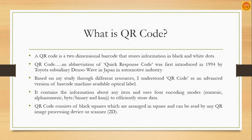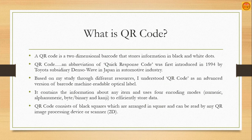QR stands for Quick Response Code. It was initially introduced in 1994 by a Japanese company from the Toyota automotive industry. Based on my study, I understood that the QR code is an advanced version of barcode — a machine-readable optical label. When we generate a barcode, it generates strips or lines based on the information provided to the system. The QR code is the advanced version of that barcode, and it is generally known as a two-dimensional barcode containing information in black and white dots.